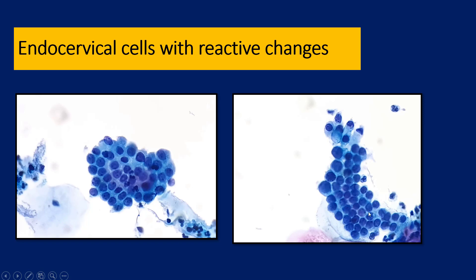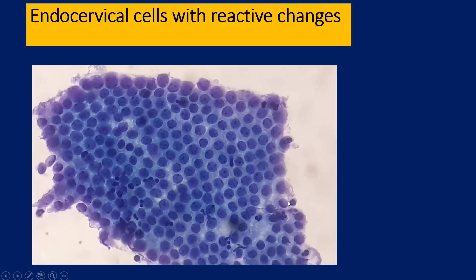Chromatin is pretty evenly distributed; there may be prominent nucleoli — that is something very important. Multinucleated giant cells may be noted. Endocervical cells with reactive changes: when there is reactive change, the amount of mucin may reduce. Cells can get a bit of a hyperchromatic appearance, and there is a bit of overlap. But overall, the honeycomb pattern is maintained. Here you can see a bit of anisonucleosis — this actually looks a little bit scary, but you can see the very well-maintained honeycomb pattern. These are endocervical cells with reactive changes.